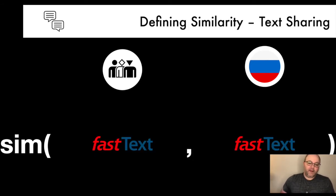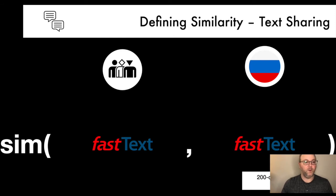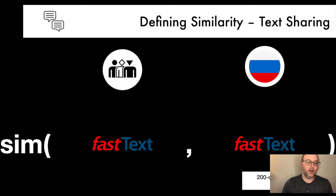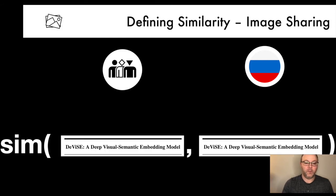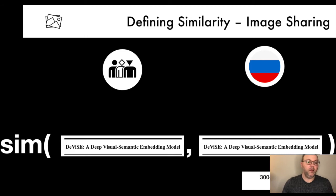For text sharing, we rely on fastText to create a low-dimensional embedding for the text these accounts have shared, which we aggregate to the account level to create an average text embedding for each account. For image sharing, we create a 300-dimensional embedding of the visual content shared by each account using the DeViSE deep visual semantic embedding model.